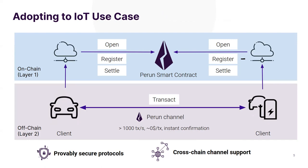One of our challenges is porting this technology to the IoT use case Manu described. In this scenario, clients are not human users but machines — such as a car and a charger. The car pays the charger in small amounts depending on charging, and the car might not be directly connected to the blockchain but may connect through a node that acts on its behalf. These are the abstractions we need to implement to make this work for IoT.